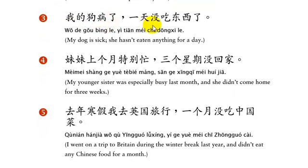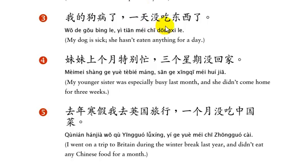我的狗病了，一天没吃东西了. My dog is sick. She hasn't eaten anything for a day. So: 一天, the time period, then 没, then the verb and object 吃东西, then 了.